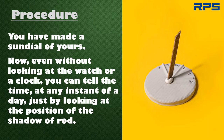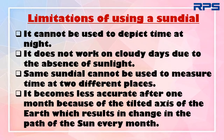Now you have made a sundial of your own. Even without looking at a watch or clock, you can tell the time at any instance of the day just by looking at the position of the shadow of the rod. Let us discuss the limitations of using a sundial. A sundial cannot be used to depict time at night. It also does not work on cloudy days. The same sundial cannot be used to measure time at two different places. A sundial becomes less accurate after one month because of the tilted axis of the Earth, which results in the change in the path of the Sun every month.